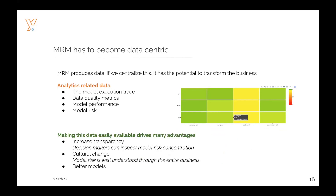If you are able to make all of this data available, you will increase the transparency. You will increase transparency because everyone will be able to create dashboards to show model risk across the model portfolio. But it would also drive cultural change, because if any party allowed to look at the data would be able to query this type of data, it will be very easy for people to see how models are evolving and model risk will be properly understood by the entire organization.